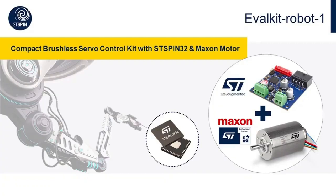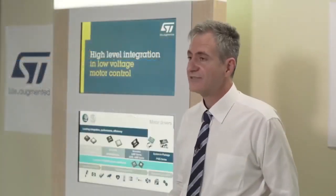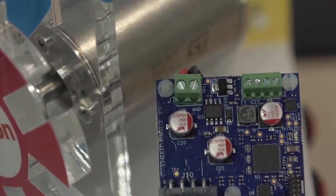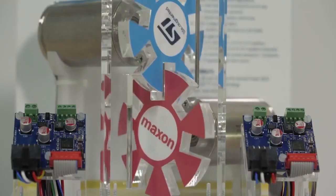The EvalKit Robot 1 is a complete servodrive for BLDC motor based on STSPIN32F0A. Thanks to its high level of integration, a microcontroller plus a gate driver in a single package, it's possible to build a full system adding only the power switches that your application requires.